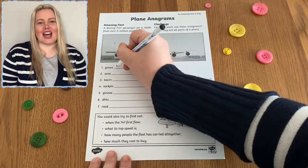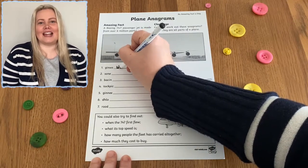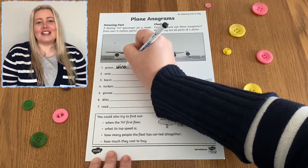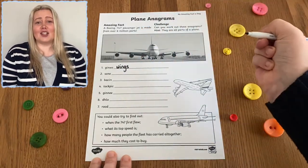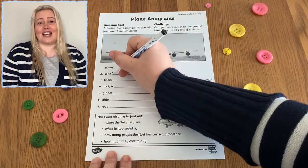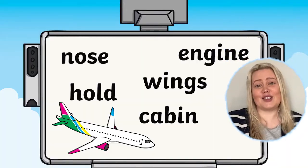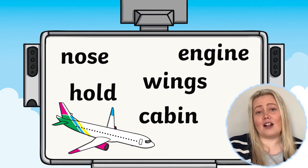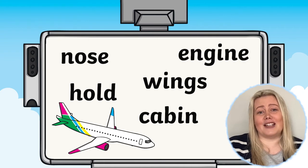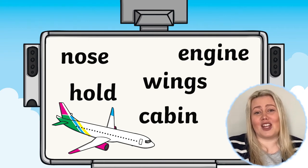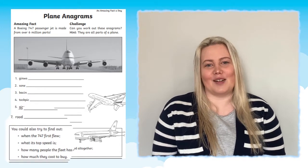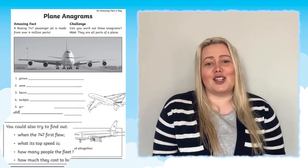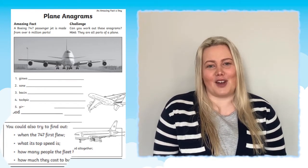Why not ask learners to have a go completing this fun plane anagrams worksheet? Simply ask them to unscramble each set of letters to create a word linked to planes or flying. If learners need a little bit more help with this activity, try putting together a plane vocabulary word bank with them before they start. When learners have unscrambled all of the anagrams, there are also some fun research questions for them to explore further.